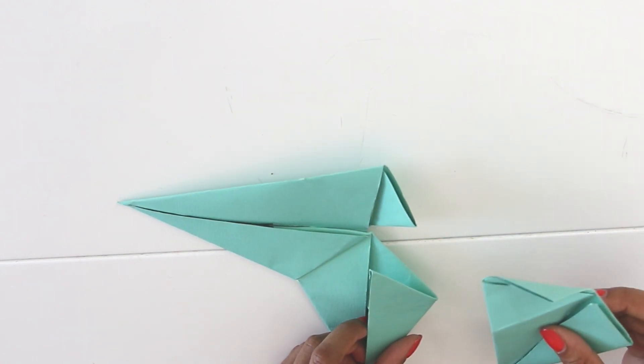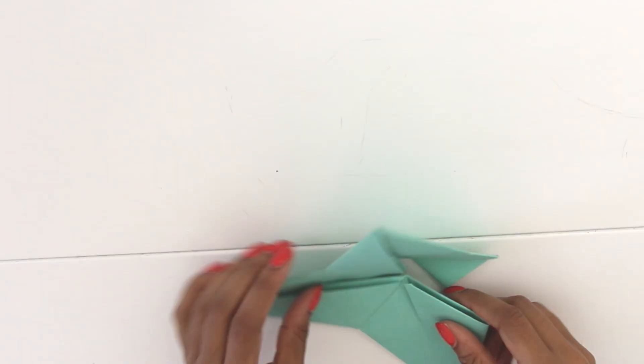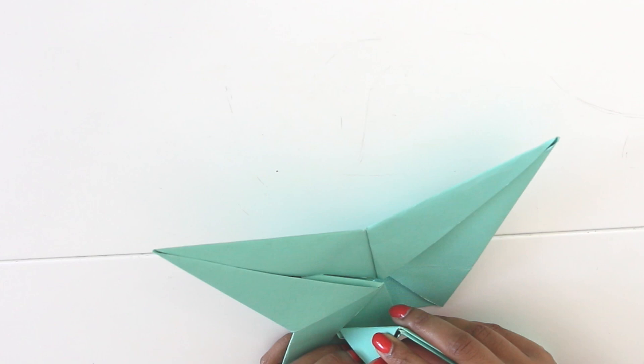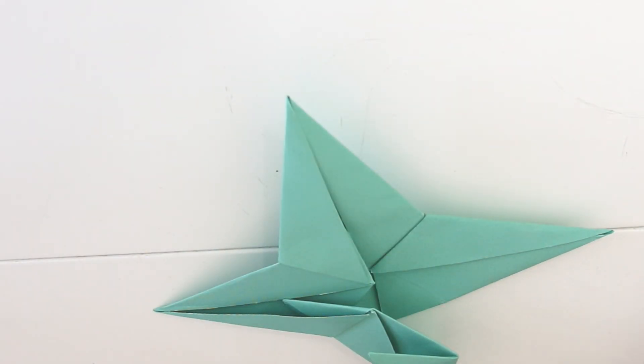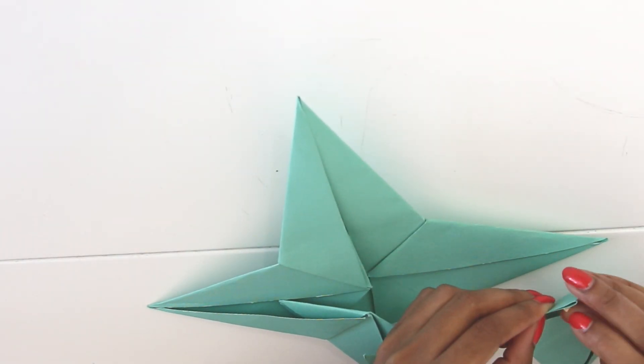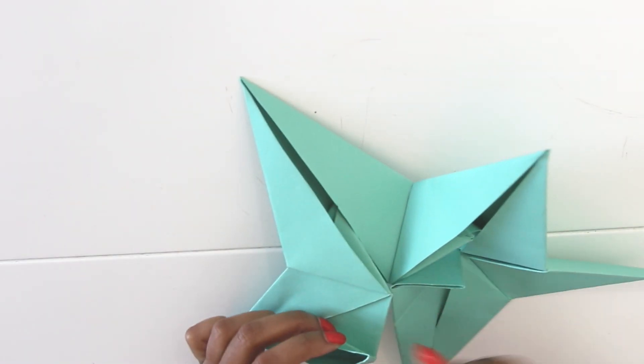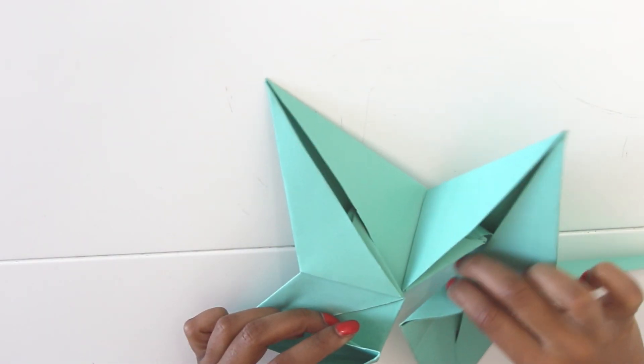Et voilà, on a déjà deux modules d'assemblés. Maintenant on répète exactement les mêmes étapes pour les autres modules. Si vous n'en faites que 4, votre étoile sera toute plate. Et si vous rajoutez une cinquième branche, dans ce cas elle aura un petit peu de volume.